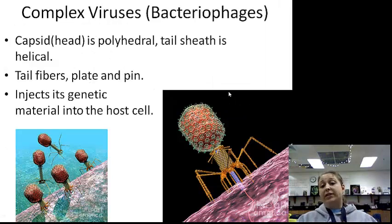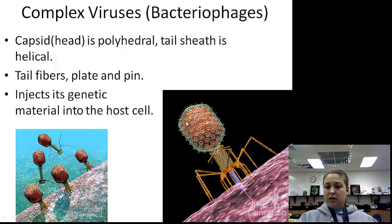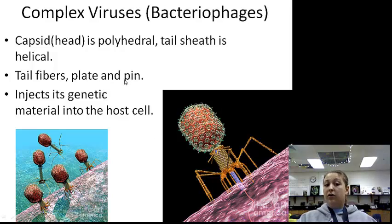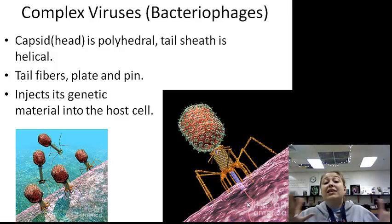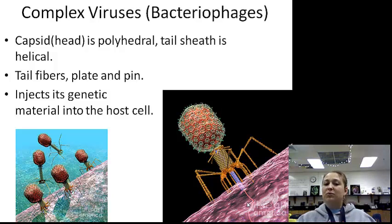Complex viruses — bacteriophages. This one is my favorite. The capsid is polyhedral, then the tail sheath is a helical type structure. We've got our tail fibers and our plate and pin. This guy literally gets onto a cell and injects his DNA into the cell — he doesn't even need to go into the cell, he just injects his DNA. We'll talk about that more later.